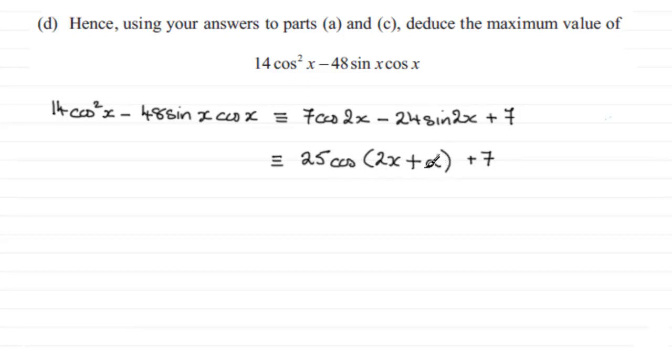Okay, so therefore if we take the maximum value of the cosine of this angle, whatever it happens to be, the maximum value will be 1. Times it by 25 and you've got 25, add the 7 and you get 32.